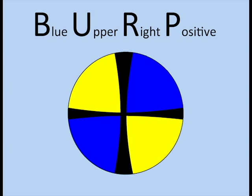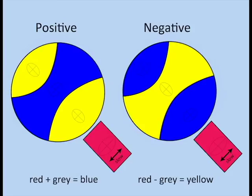We use the BURP rule as a simple reminder: blue upper right is positive. The BURP rule still applies to biaxial conoscopic figures, but they look slightly different.